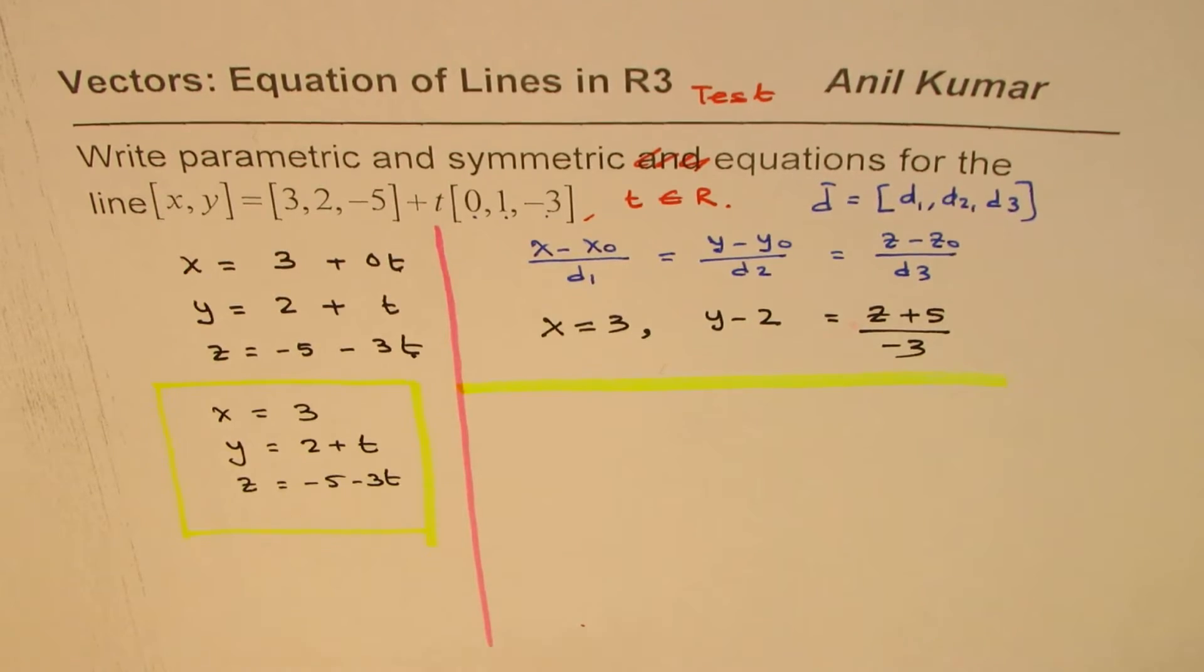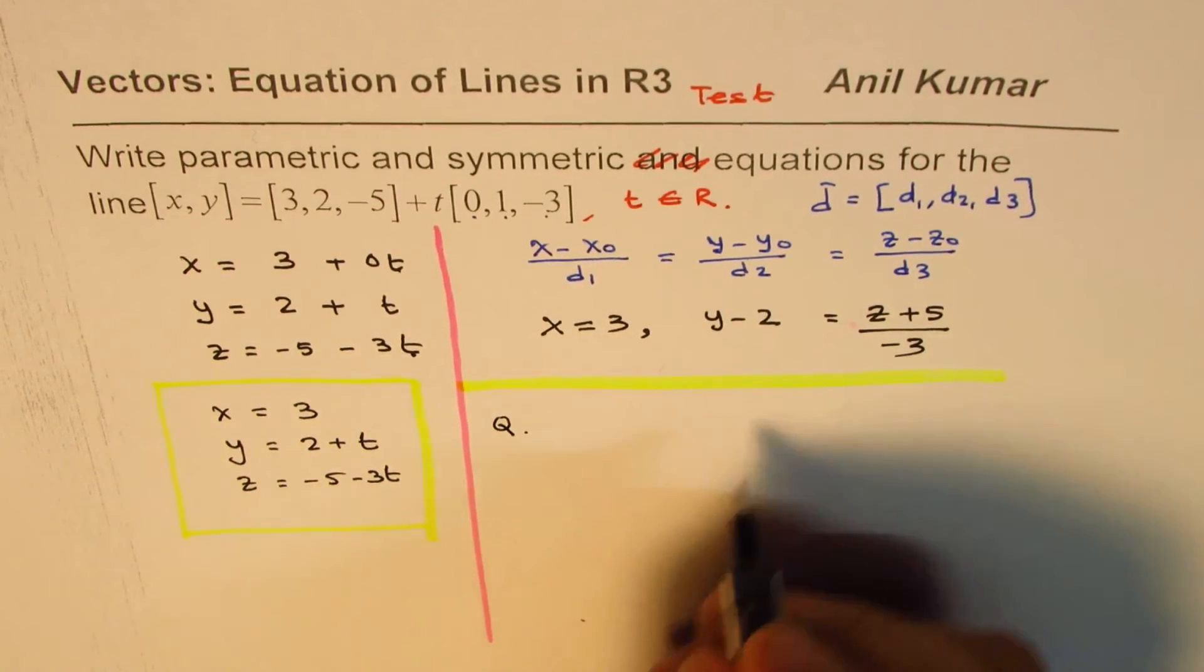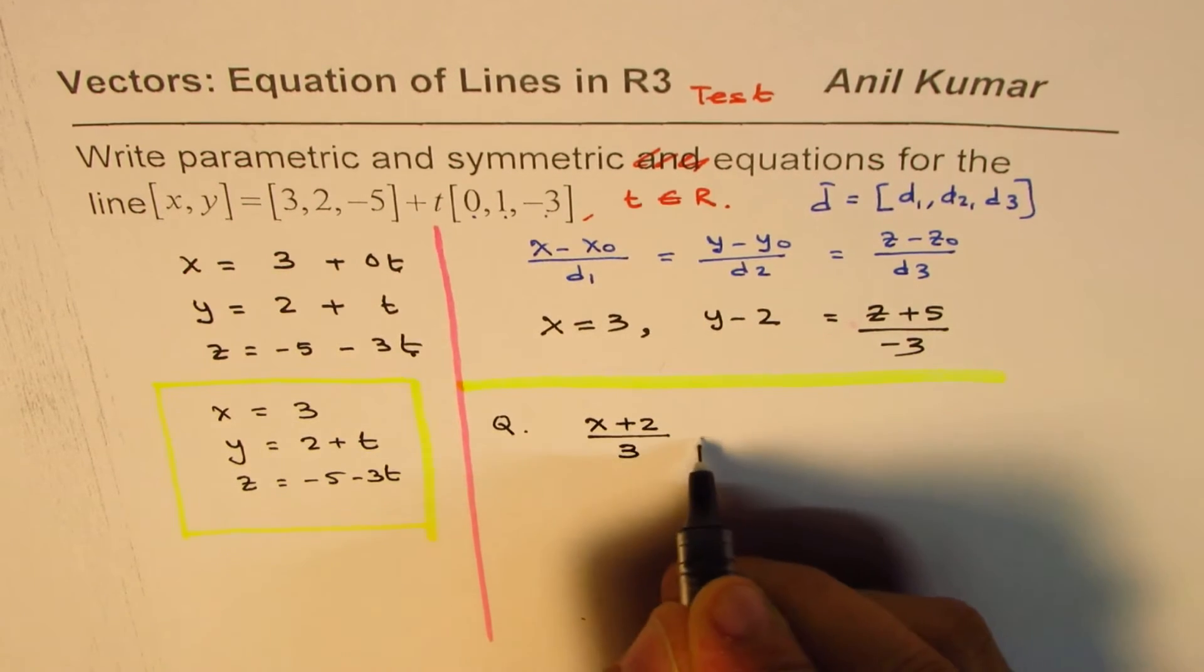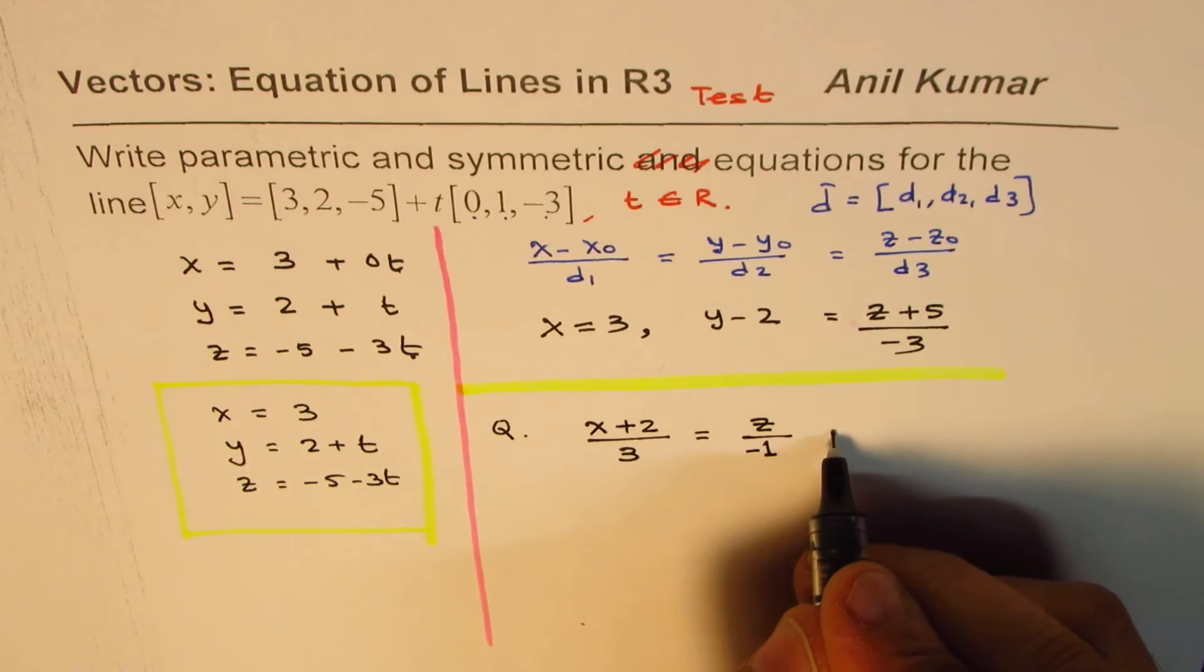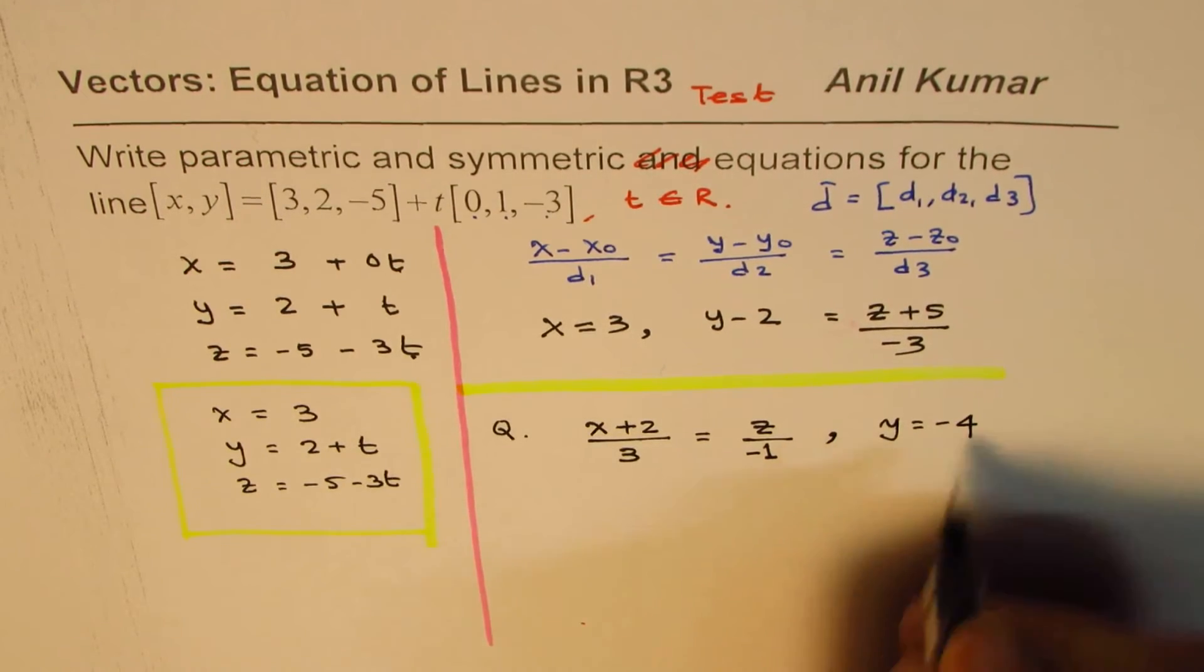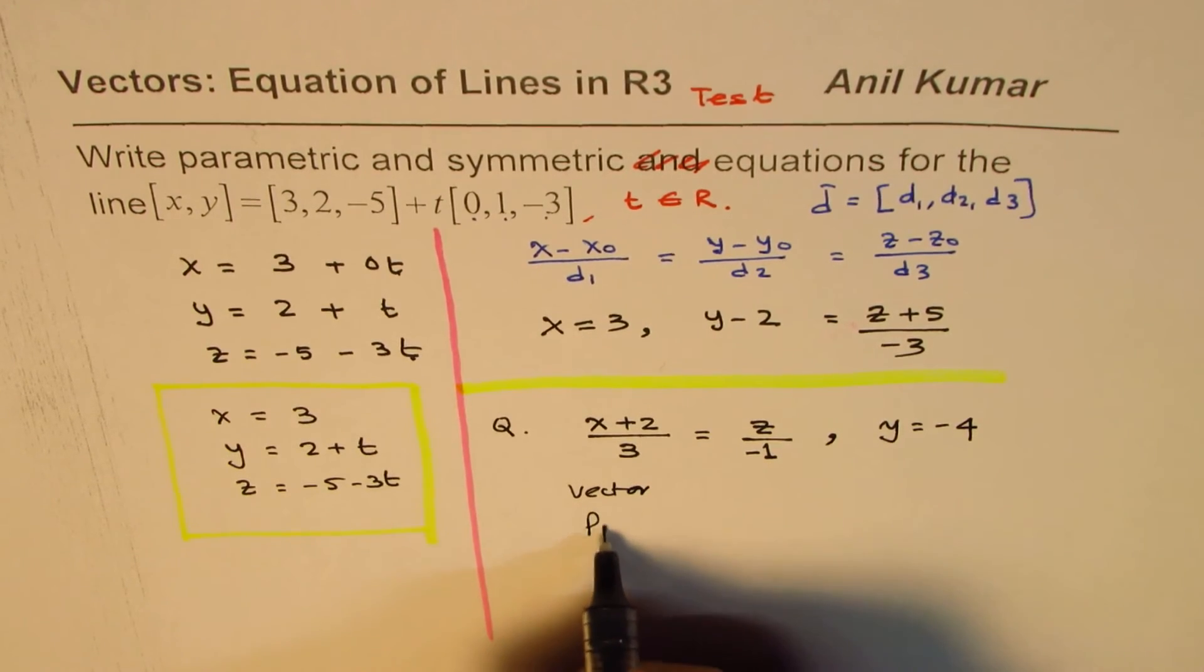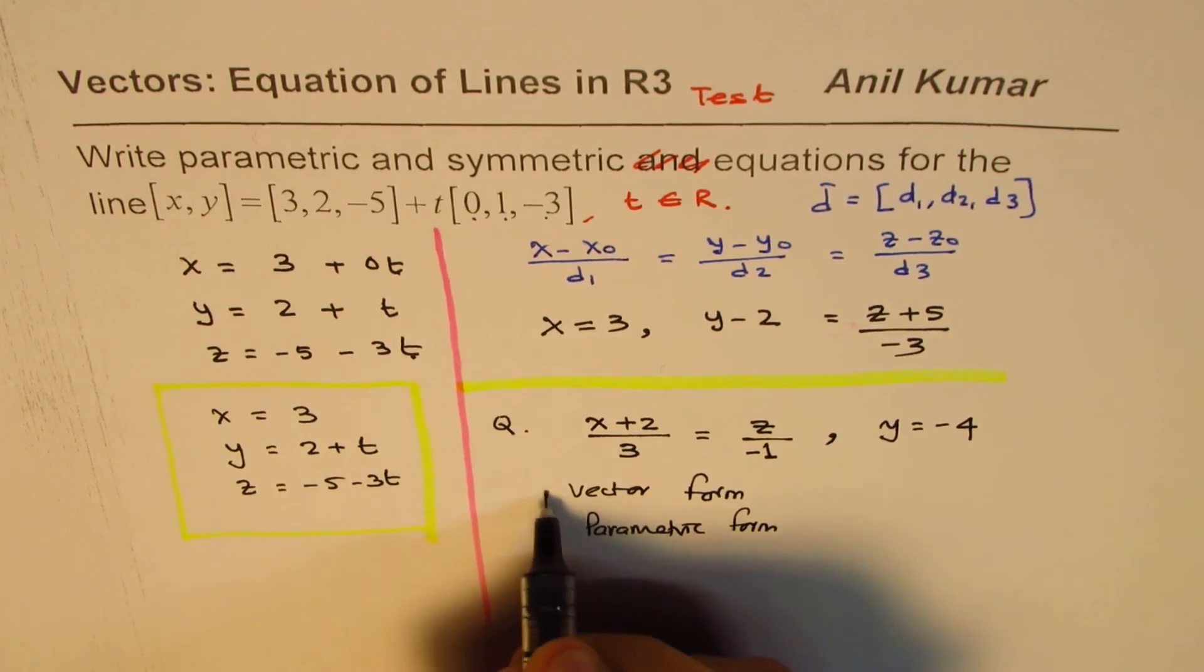Now what I will do here is I'll give you a symmetric equation, and you need to write it in other forms. So let this be a question for you. The symmetric equation is x plus 2 over 3 equals to z over minus 1, and we'll write with comma y equals to minus 4. So I'd like you to write this in other forms, that is vector form, parametric form. So convert this to vector and parametric form. So that is your question.